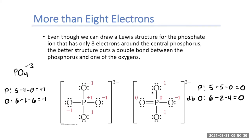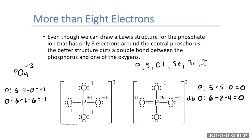You might ask why we can't make all oxygens double-bonded so all formal charges are zero — but then phosphorus's formal charge would be too high. We always want to get as close to zero as possible, and if something must carry a negative charge, it should be on the more electronegative element. The expanded octet applies to anything in row three or below: phosphorus, sulfur, chlorine, selenium, bromine, iodine — all can expand their octet.